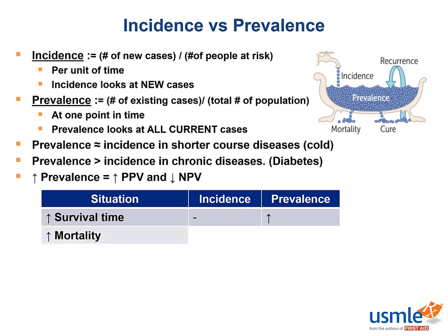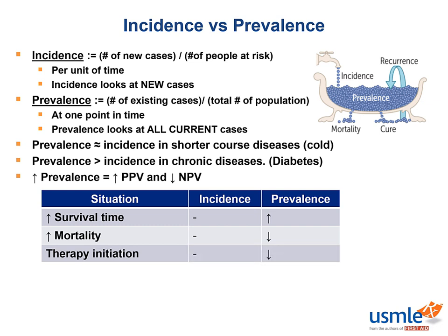How about increased mortality? This would decrease prevalence, because we have more deaths occurring from the disease — more water leaking out of the tub. How about therapy initiation? This would also decrease prevalence, because we are increasing the chances that a patient will be cured sooner. How about faster recovery time? Again, prevalence is down because we have more people getting healthier faster.